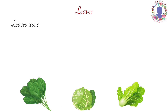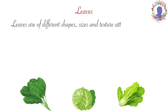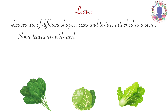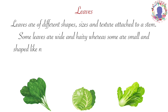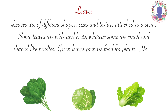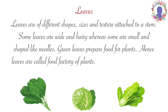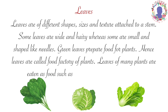Leaves are of different shapes, sizes, and texture attached to a stem. Some leaves are white and hairy whereas some are small and shaped like needles. Green leaves prepare food for plants. Hence, leaves are called the food factory of plants. Leaves of many plants are eaten as food such as spinach, cabbage, lettuce, etc.